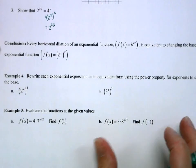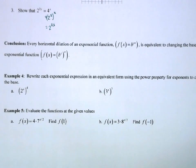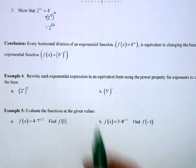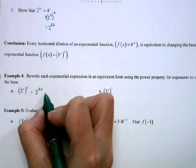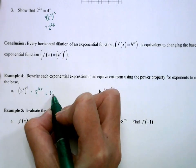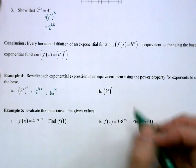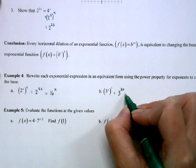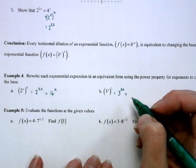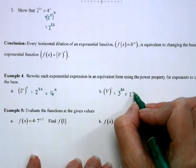So we're going to rewrite each with an equivalent base. So I can rewrite this as 2 to the 4x. So my new base would be 2 to the 4, which would be 16 to the x. Here I could rewrite this as 3 to the 3x. 3 to the 3x is 27, so this new base is 27.